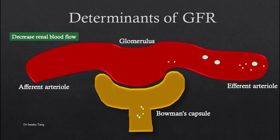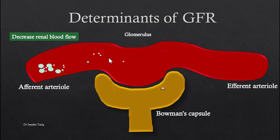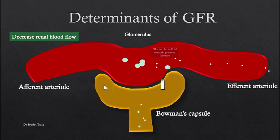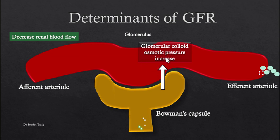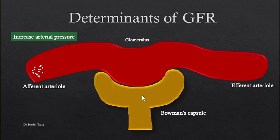Whenever there is a decrease in renal blood flow, that leads to stagnation and accumulation of plasma proteins in the glomerular area. This increase in plasma proteins leads to an increase in glomerular colloid osmotic pressure. Whenever this pressure increases, it creates a suction force that opposes the filtration of fluid from the glomerulus into the Bowman's capsule, thus decreasing GFR.